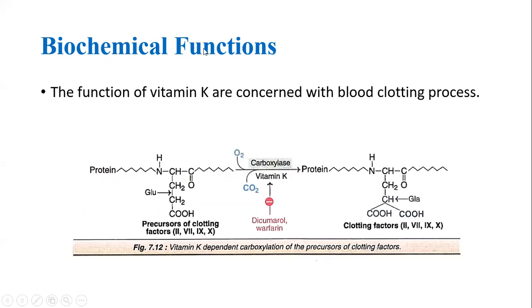Now we will be discussing the biological functions of vitamin K. The main function of vitamin K is concerned with blood clotting factors. Vitamin K converts the precursors of clotting factors — clotting factors 2nd, 7th, 9th, and 10th — from inactive pro-clotting factors into active clotting factors. Along with vitamin K, the enzyme carboxylase and gases like oxygen and CO2 are required to activate these clotting factors. The carboxylase enzyme adds a carboxylic group to the precursors of the clotting factors.